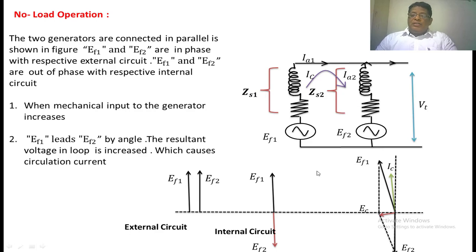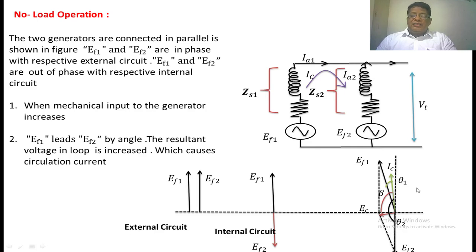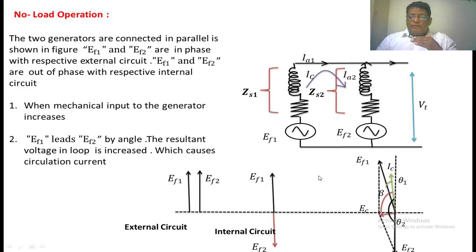Because of this circulating voltage, a circulating current will flow through the two generators. Since we are not connected to any load, the circulating current lags the circulating voltage by 90 degrees, neglecting the armature resistance of the two generators. The angle between the circulating current Ic and EF1 is theta1, which is less than 90 degrees. So the synchronizing power of the first generator equals EF1 into Ic into cosine of theta1. Since theta1 is less than 90 degrees, the power is positive, meaning this machine operates as a generator, so its speed will be decreasing.